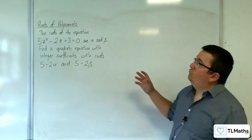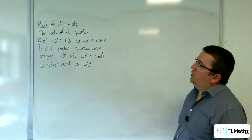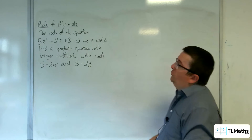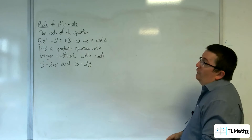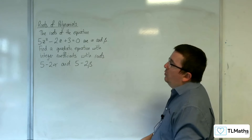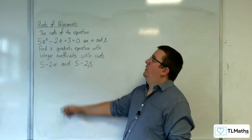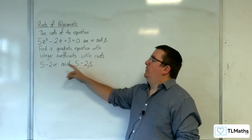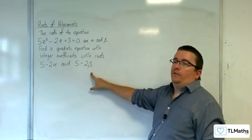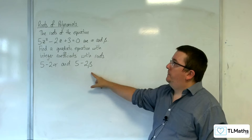In this video, the roots of the equation 5z squared take away 2z plus 3 equals 0 are alpha and beta. Find a quadratic equation with integer coefficients with roots 5 take away 2 alpha and 5 take away 2 beta.